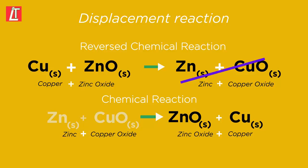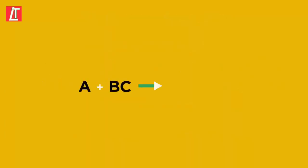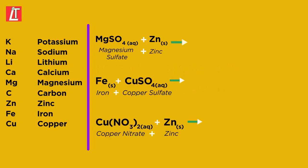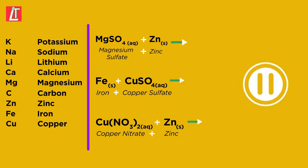This shows how we can use the reactivity series to predict if a reaction will go, and if it does, then we can name the product by switching the names of the metals around. Try these examples — decide whether the reaction will work and if so, name the products. Pause the video while you work this out.